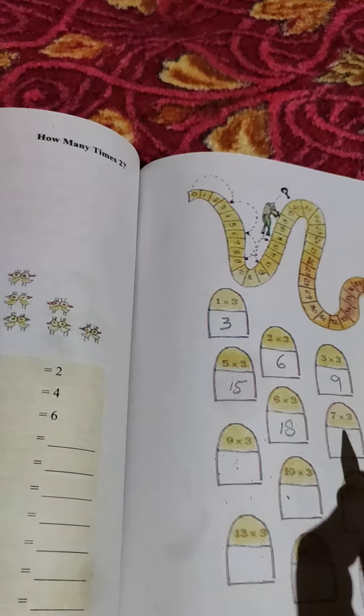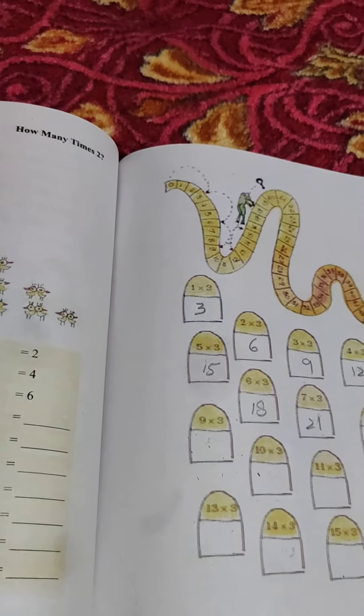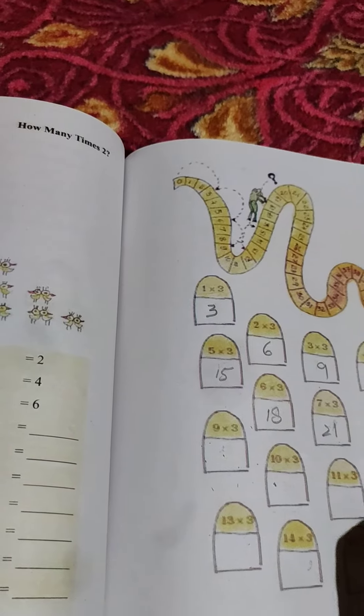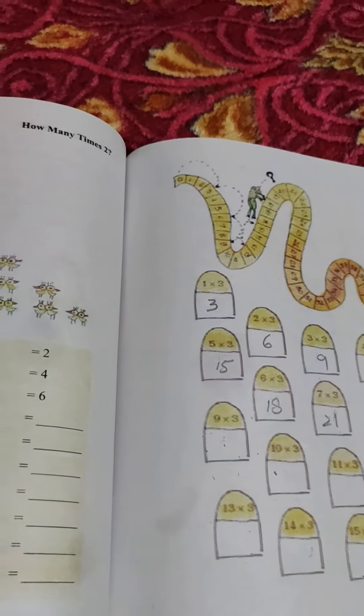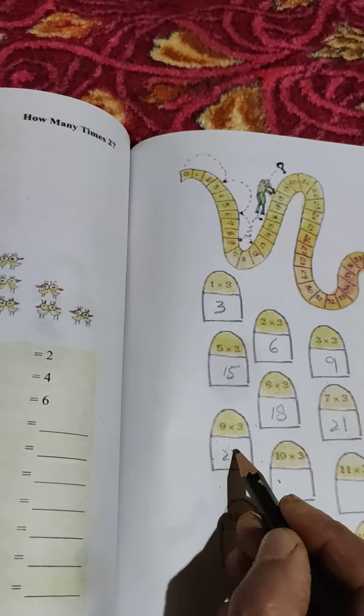Seven threes are 20... one. Eight threes are 20... four. Nine threes are 20... seven.